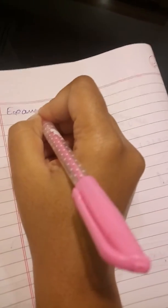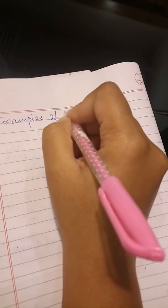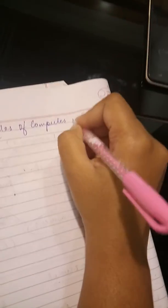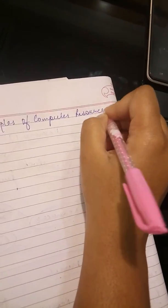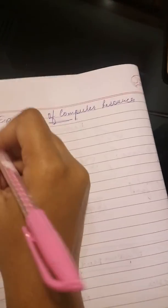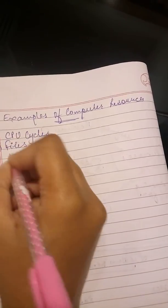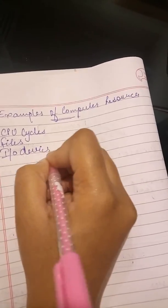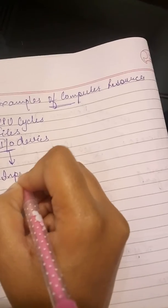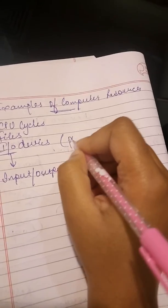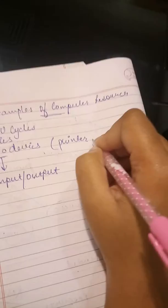So we are giving some of the examples. One second, let's just have an image from starting. So now examples of computer resources: CPU cycles, files, I/O devices. Here the word I/O means input output devices. These are printer, tape drivers etc.